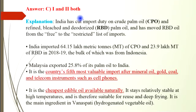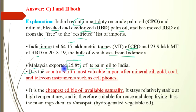India has cut import duty on crude palm oil and refined, bleached and deodorized palm oil, and has removed RBD oil from the free to restricted list of imports. India imports around 64 lakh metric tons of CPO and 33.9 lakh metric tons of RBD in 2018-2019, bulk of which are from Indonesia. Malaysia exports 25.8% of palm oil to India. Palm oil is India's fifth most valuable import after mineral oil, gold, coal and telecom instruments such as cell phones. It is the cheapest edible oil available naturally, stays stable in high temperatures, and is suitable for reuse in deep frying. It is also a main ingredient in Banaspati, which is hydrogenated vegetable oil.